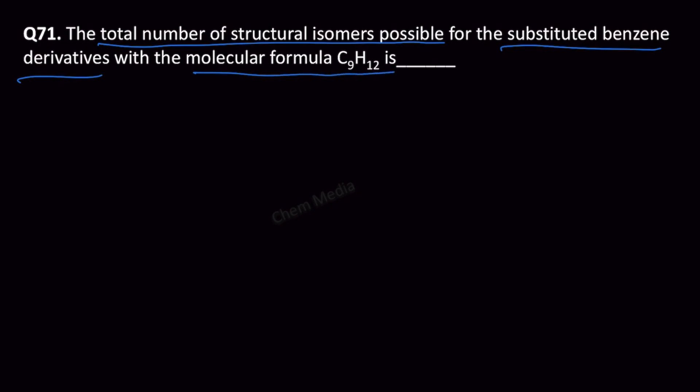Let us first determine the degree of unsaturation for C9H12. This is a hydrocarbon, so for hydrocarbon it is 1 plus number of carbon atoms minus number of hydrogen atoms by 2.